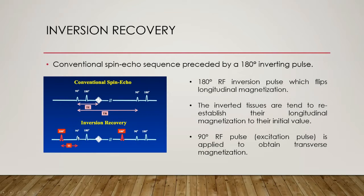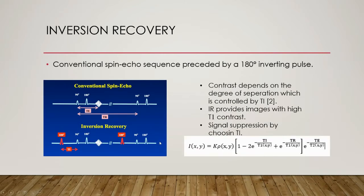The time between the first 180 degree inversion pulse and the 90 degree excitation pulse is called inversion time, Ti. When spin echo signal generation begins at the 90 degree excitation pulse, the initial longitudinal magnetization of different types of tissues are now separated based on their different T1 relaxation times. The gathered image contrast will be determined by this degree of separation, which is controlled by the Ti parameter.